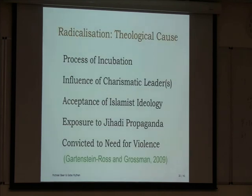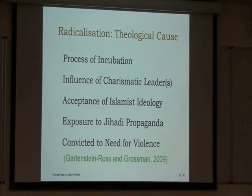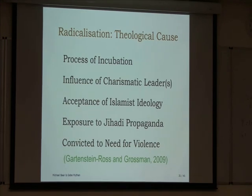The second example, Gottstein, Ross and Grossman, talks about a process of incubation. There is a time where people are behaving normally, but then they begin to take up different friendship groups and have what's known as a crisis or opening — something happens in their lives that changes their behavior, opening them up to doing something radical and dangerous. There is also an influence of charismatic leaders and religious elders, exposure to Islamist ideology, and jihadi propaganda — both books and internet websites. Individuals become convicted of the need for violence. A kind of similar model but with a different inflection, focusing more on theological causes.